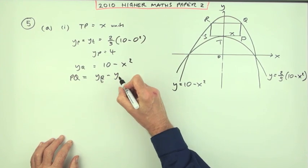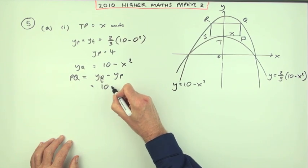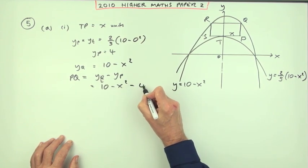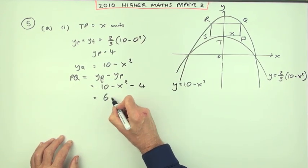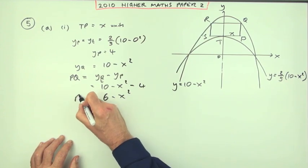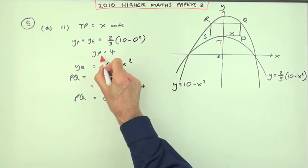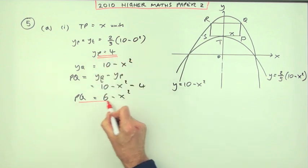Y-coordinate of Q minus the y-coordinate of P. That'll be 10 minus x squared minus 4. So that's 6 minus x squared. So that was the first mark. That's the second mark for the first part.